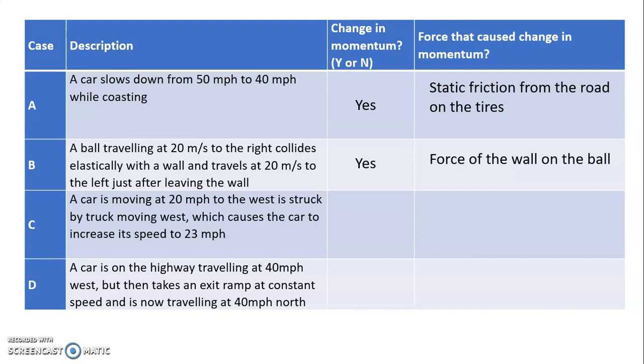Case C, we have a car moving at 20 miles per hour to the west. Gets hit from behind by a truck. And that speeds up the car. So that is a change in momentum. And what caused it? The truck did. The truck pushed on the car.